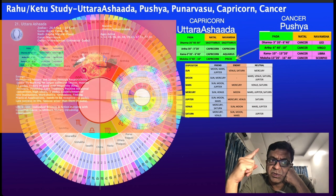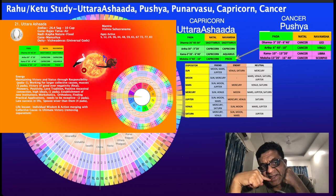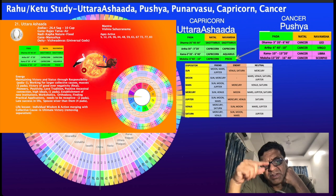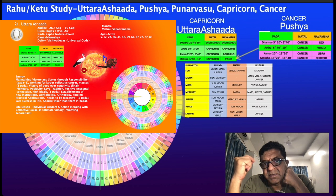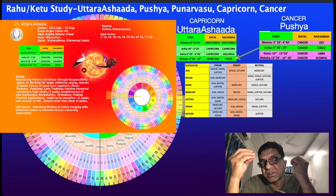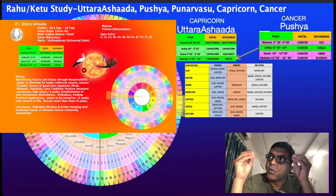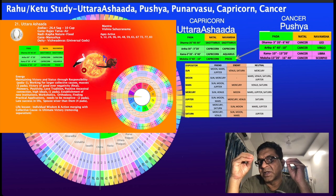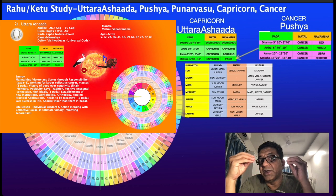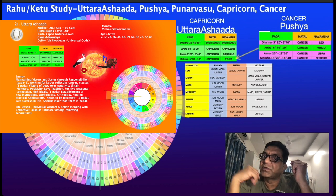Now we are talking about Rahu in Uttarashada nakshatra. Most of it falls in Capricorn, as you can see on the pie chart, and only the first Pada falls within Sagittarius. The Dharma Pada falls in Sagittarius in natal going into Sagittarius in Navamsha — in Uttarashada. The second Pada, Artha, goes from Capricorn to Capricorn. This has two Vargottama points, which are very important — meaning the position in the birth chart is the same in the Navamsha.